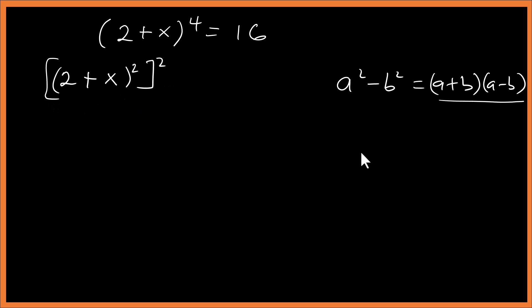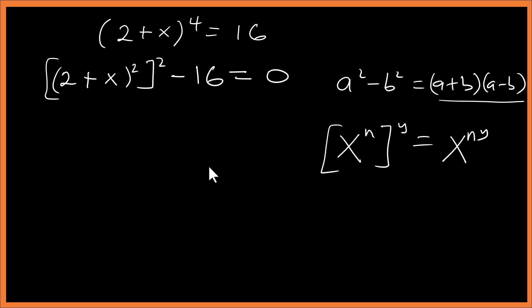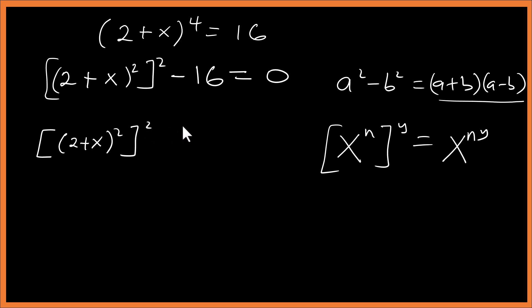Using the exponent rule, x to the power n raised to y is the same as x to the power n times y. So (2 + x) to the 4 is the same as ((2 + x) squared) squared. We rewrite this minus 16 equal to zero.